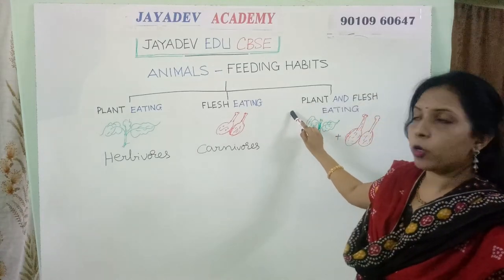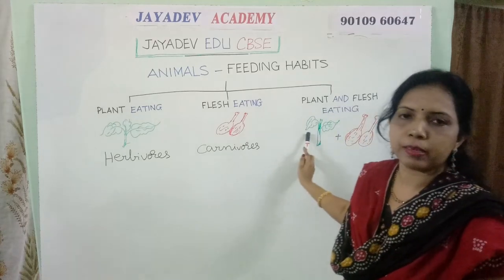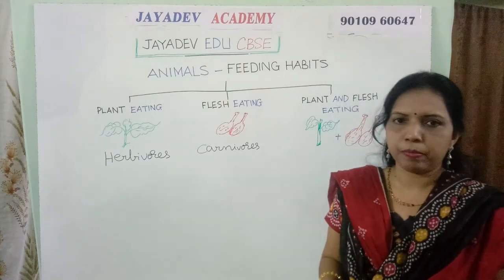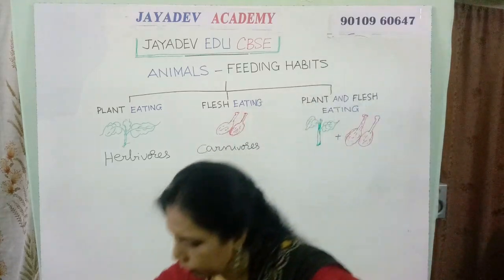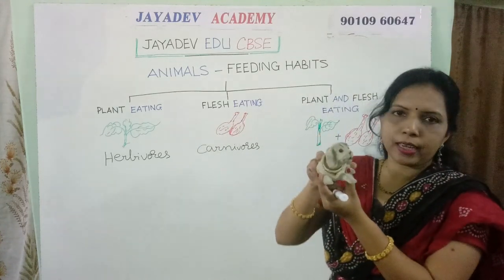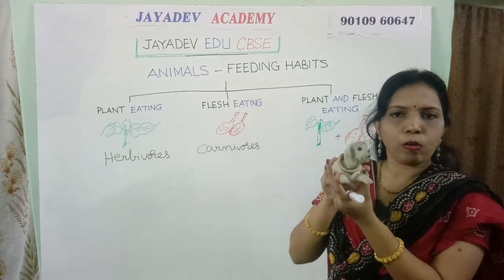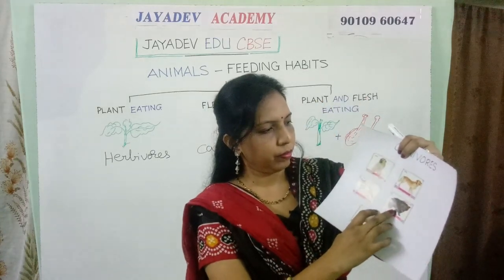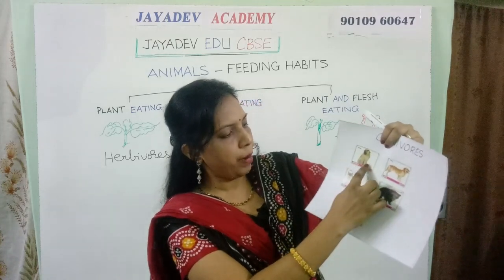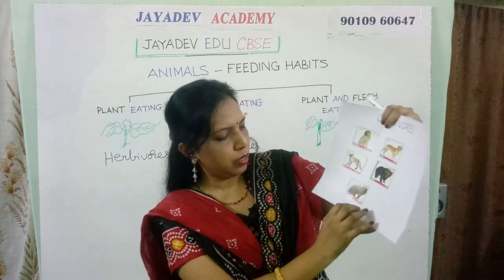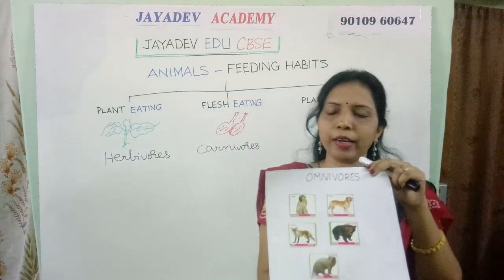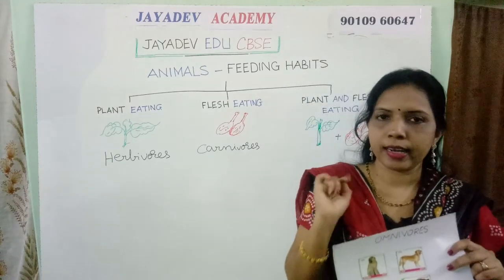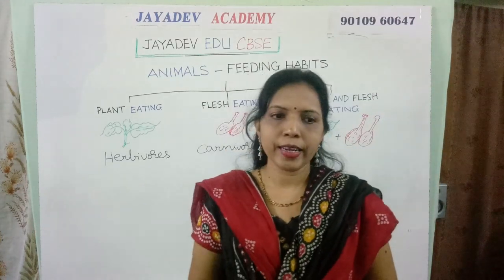The third type is animals that eat both plants and the flesh of other animals. These are called omnivores or omnivorous animals. Like in our houses, a pet animal called dog is an omnivore. Even a bear, a dog, a monkey, a fox, and a mongoose — all these are omnivores. They eat both plants and flesh of other animals.